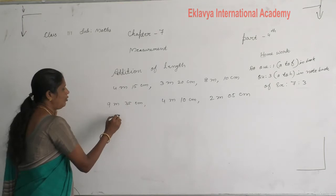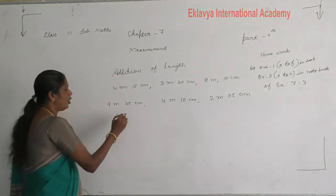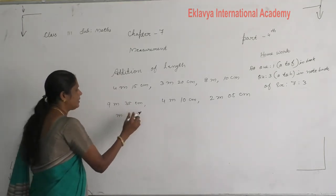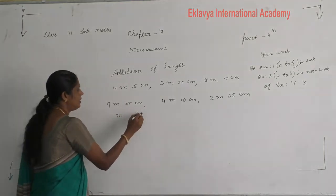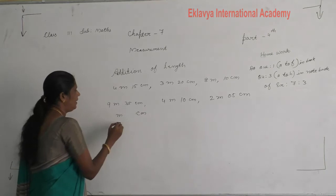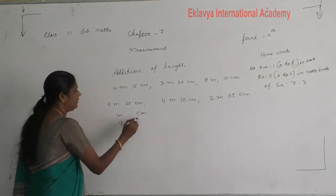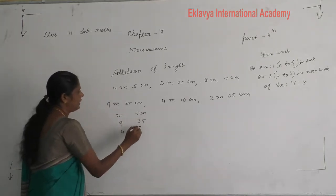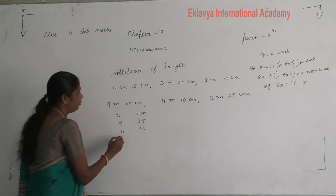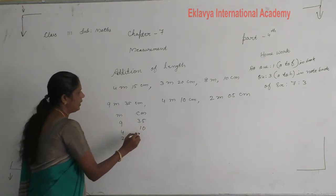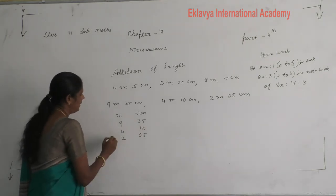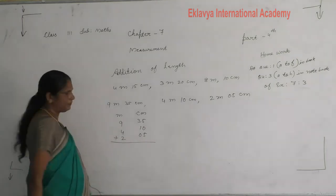Again you make 2 columns — meter and centimeter. Write 9, 35; then 4, 10; then 2, 05. Then add these numbers.